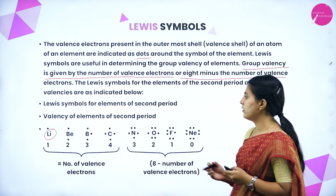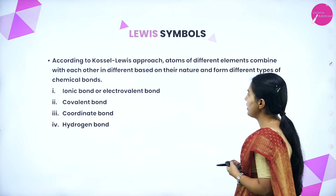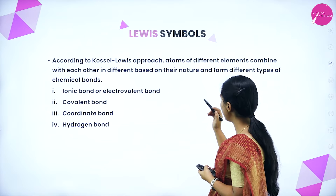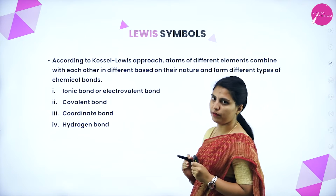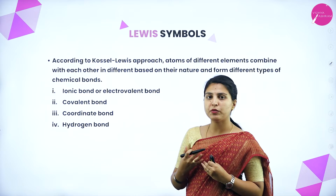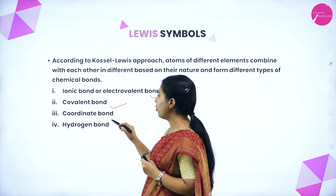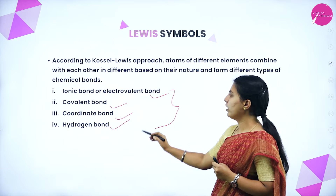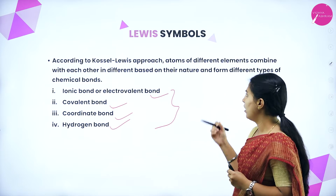Based on its nature, different types of chemical bonds will form: ionic bond or electrovalent bond, covalent bond, coordinate bond, and hydrogen bond. These are the four kinds of bonds seen in molecules.